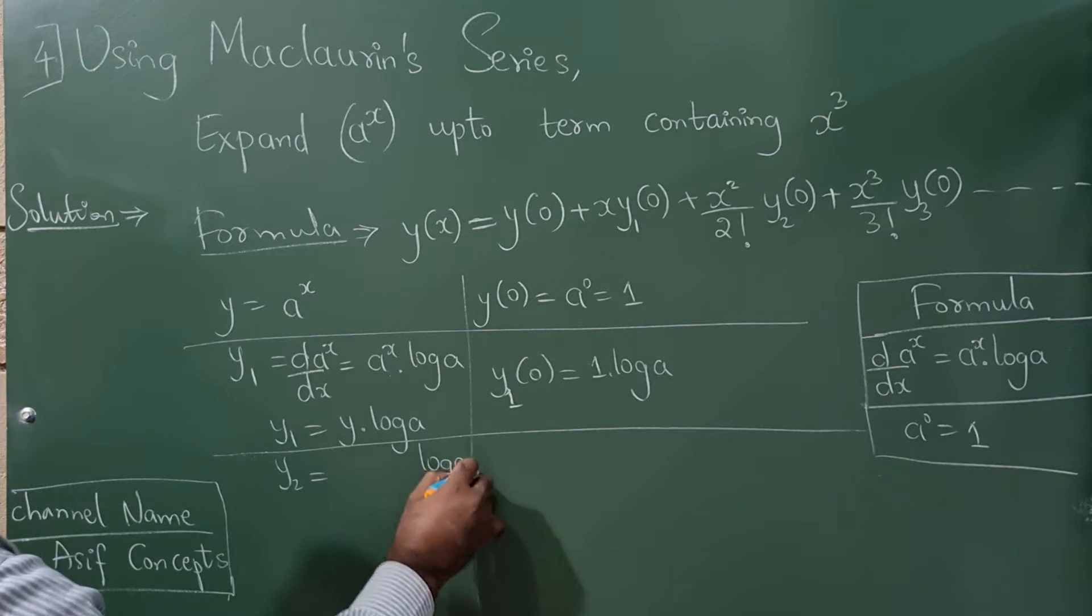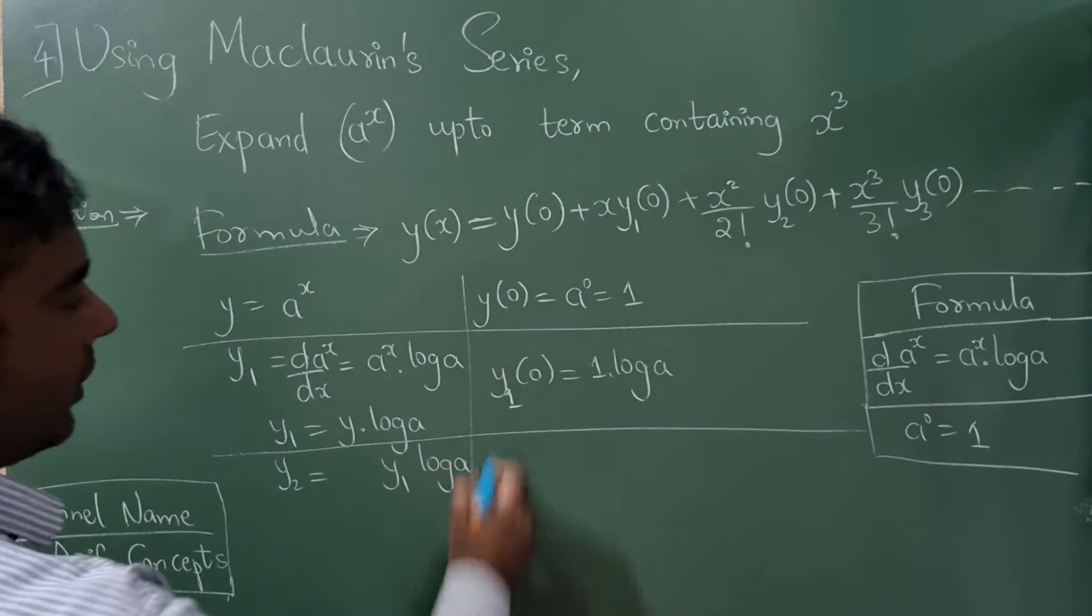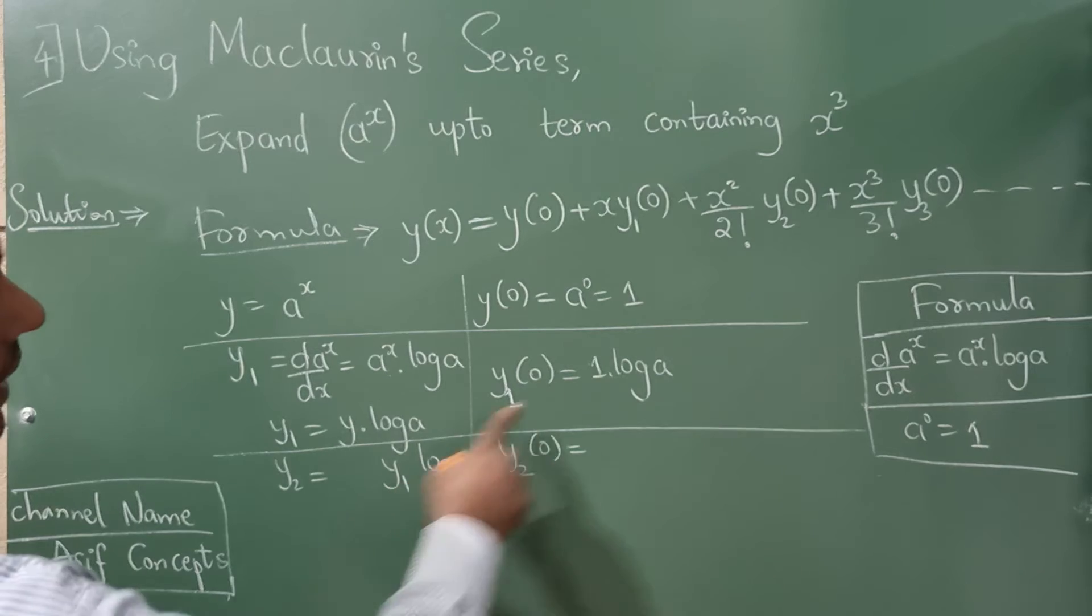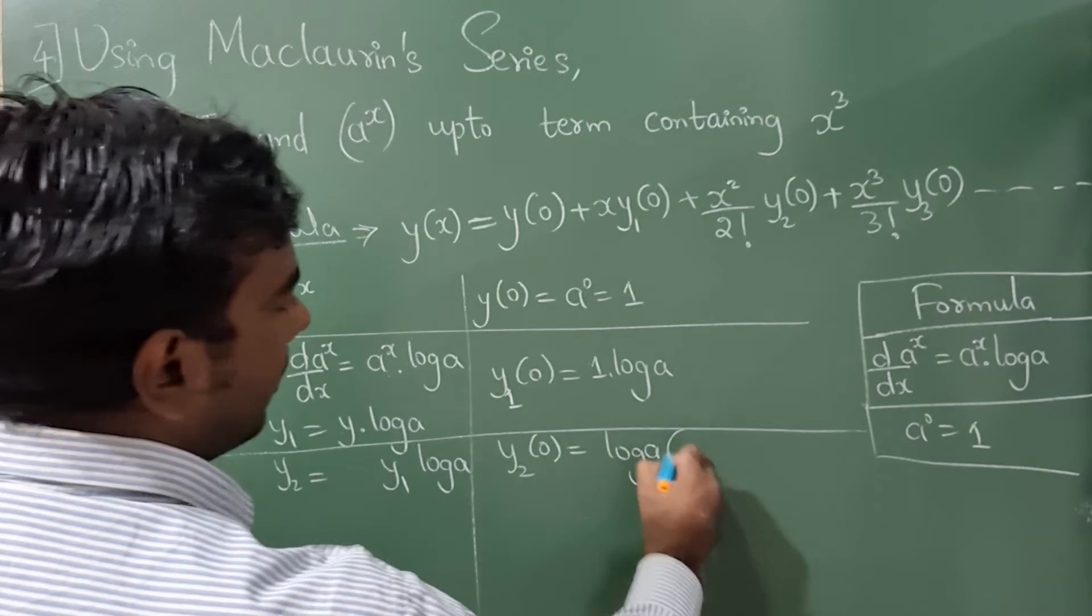If you differentiate this you will get y₂. This is constant, you have to write log a. If you differentiate y then you get y₁. Now y₂(a₀), what is y₁ value? It is log a and there is already a log a here.